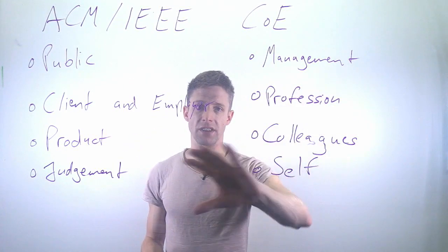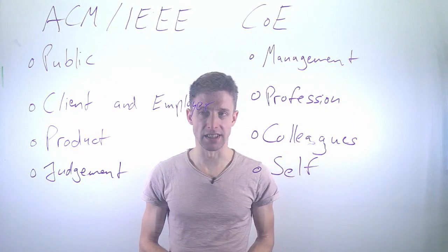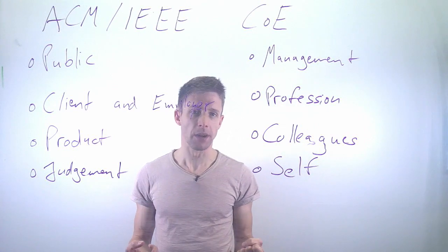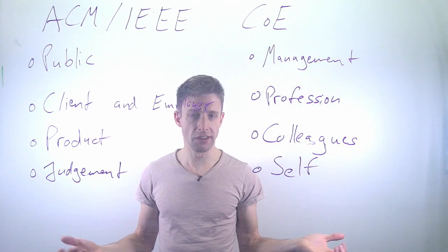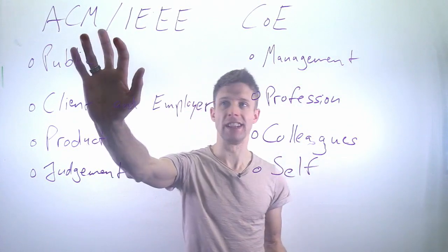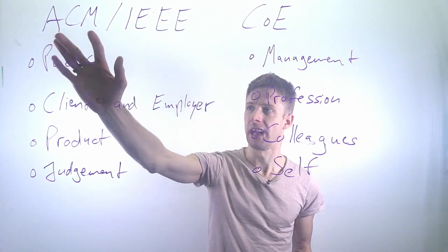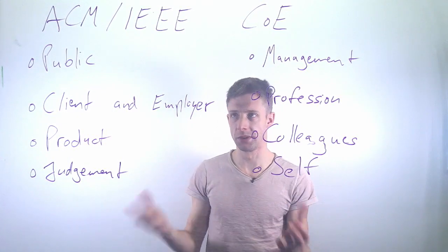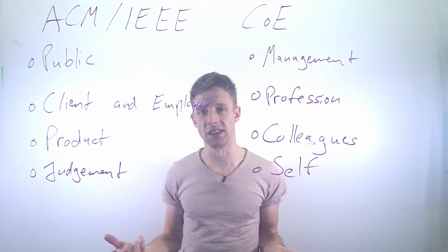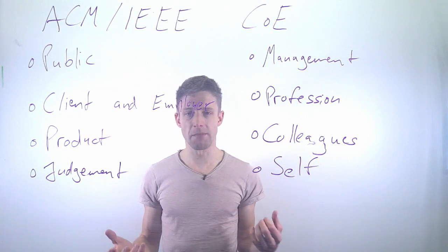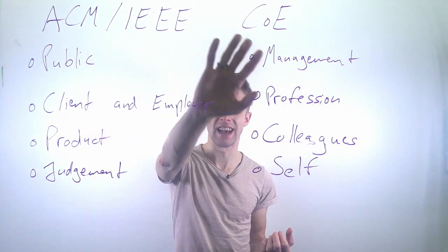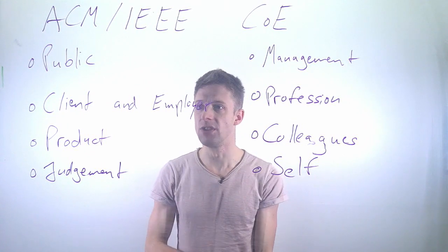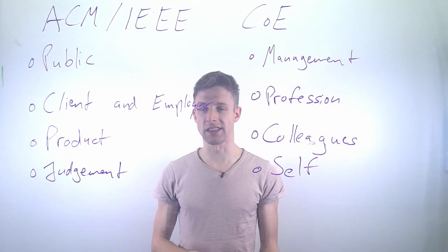In software engineering we are only at the start of that because we're a reasonably young discipline — software engineering is about 50 years old. But we do have the ACM/IEEE Code of Ethics. ACM and IEEE are the two largest professional organizations in computer science and software engineering. This code lists a number of things, and in particular eight areas that you need to take care about.